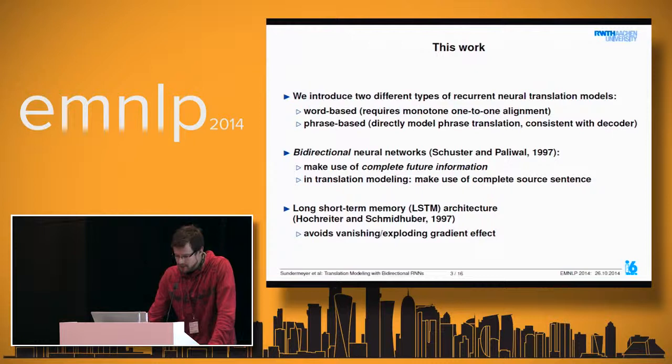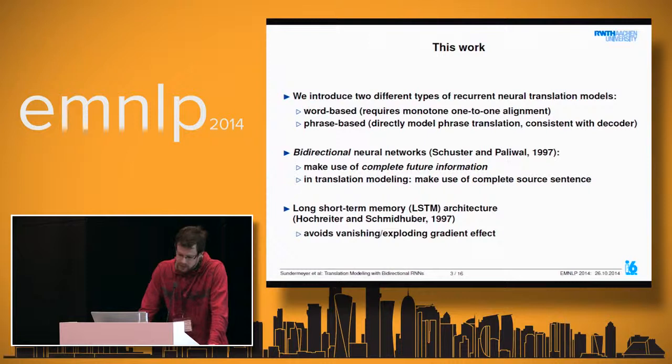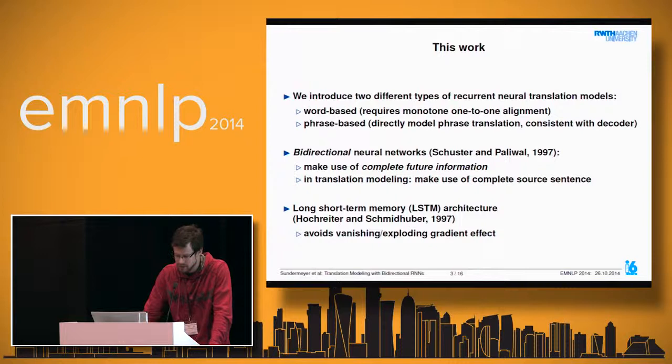Those who attended yesterday's SSST workshop will recognize things reminiscent of work presented by the University of Montreal group. We also introduce bidirectional neural networks for translation modeling. Their advantage is that they can use complete future source information when making decisions—meaning we have the complete source sentence available when predicting target words.